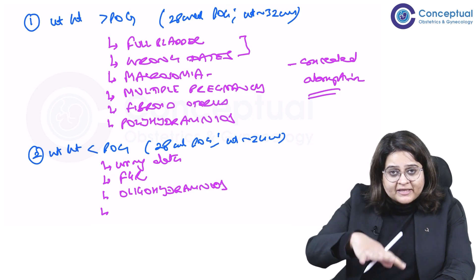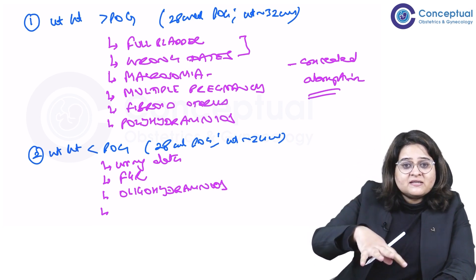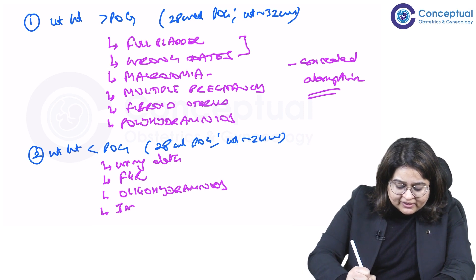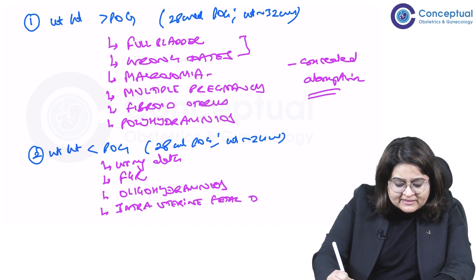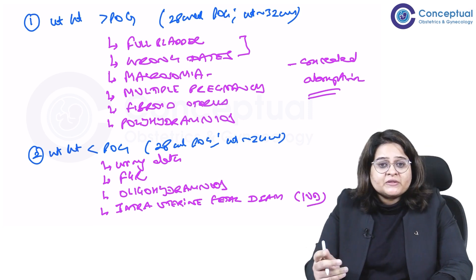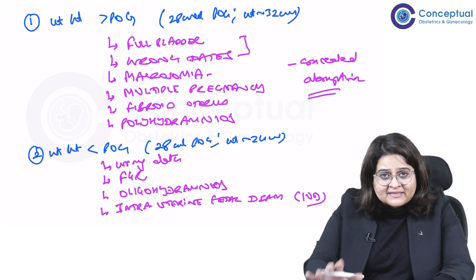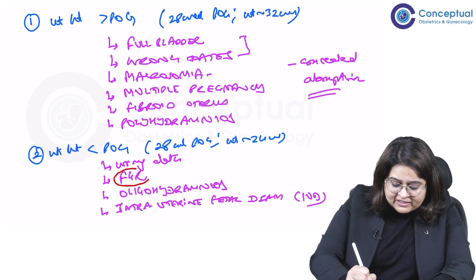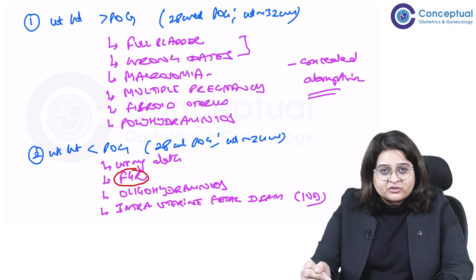What else could cause a uterine height which is lesser than the period of gestation could be actually an intrauterine fetal death. So maybe the baby has died in utero. So an IUD can also give the appearance of the uterine height less than the period of gestation.